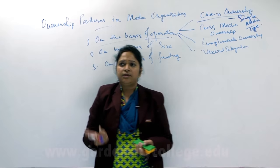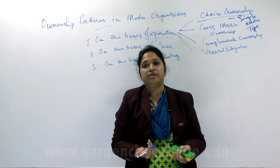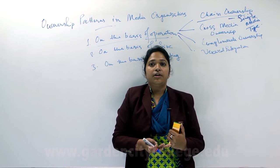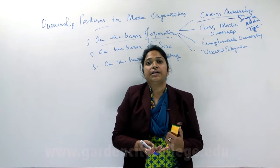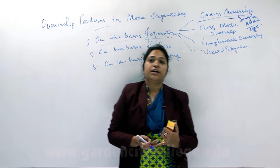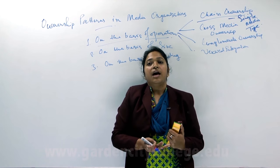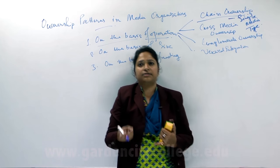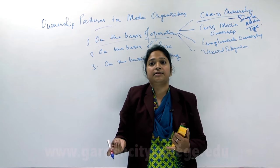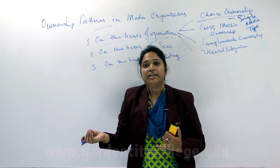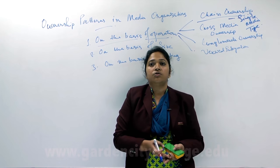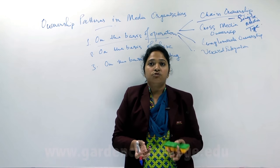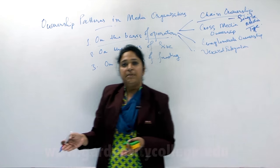Cross-media ownership is very popular in present times, and this pattern has been much prevalent in the West. If we look at examples like Rupert Murdoch — he is a media baron — he has News Corporation Limited under him and has stakes in various kinds of media types, starting from newspapers to magazines to radio. He even has assets in cable and DTH technology. These kinds of media owners have ownership across various kinds of media types.